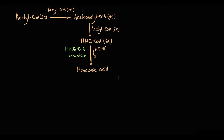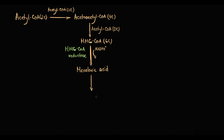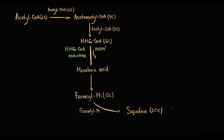Mevalonic acid undergoes further condensation that results in formation of farnesyl pyrophosphate, which has 15 carbons. Two farnesyl pyrophosphate molecules condense together with formation of squalene, which has 30 carbons. Squalene then undergoes conversion to lanosterol, and lanosterol through multiple reactions that require NADPH is converted to cholesterol with 27 carbons.